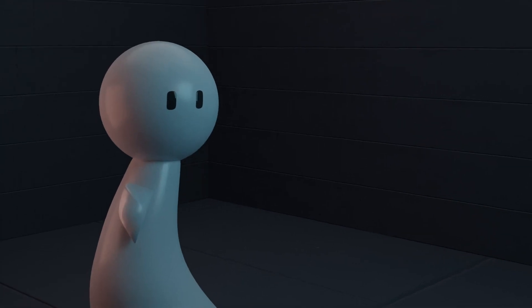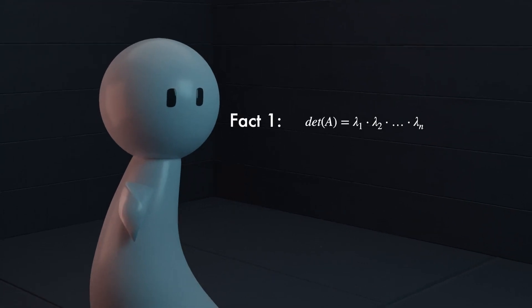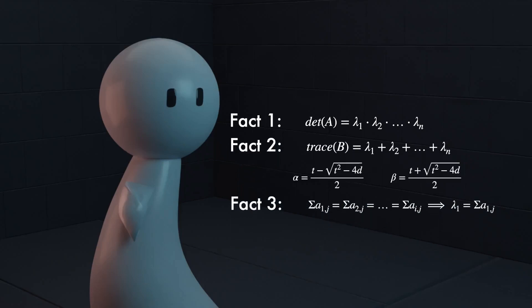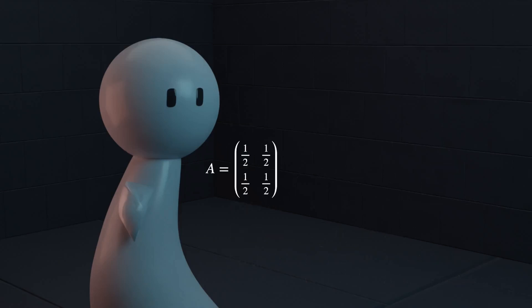Now just to recap, here are all the facts that we went over in this video. The determinant equals the product of all the eigenvalues. The trace equals the sum of all the eigenvalues. Here are the two equations we came up with. If all the rows add up to the same number, that number is one of the eigenvalues. If one of the rows is a scalar multiple of the other, one of the eigenvalues is 0. And if you have a matrix in this form, you can use these equations to find all the eigenvalues. And here are a few matrices if you would like to practice finding the eigenvalues. Answers in the description.